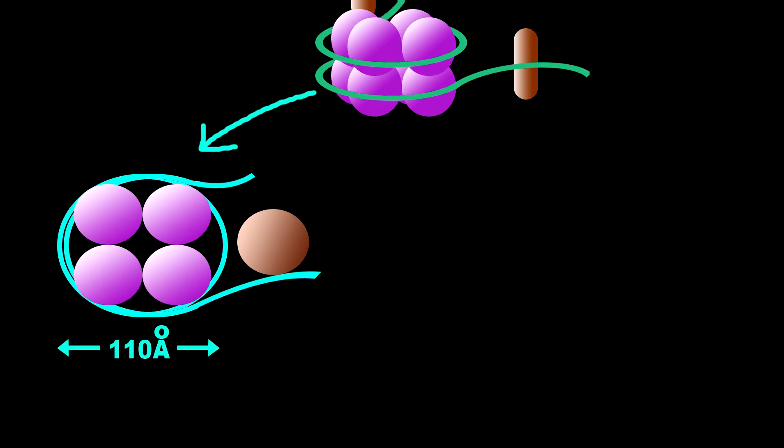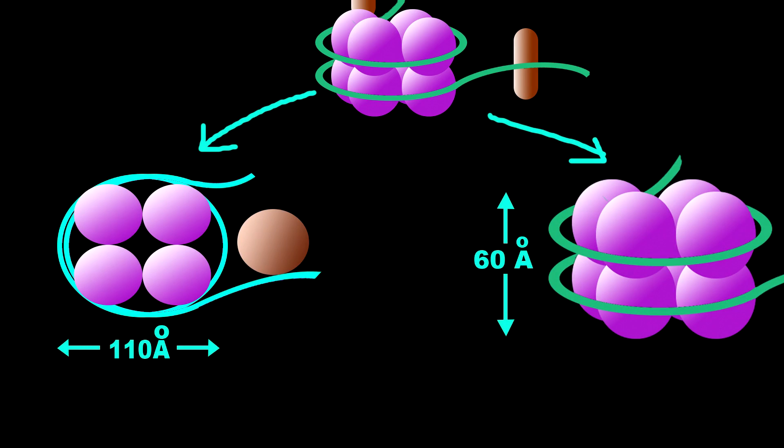Now, the arrangement of histone proteins in the core particle: If you imagine a cube, there are three opposite planes. From there, I am taking one opposite plane. I indicate those planes as number 1 and number 2.